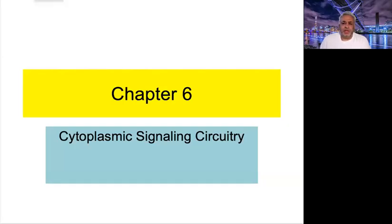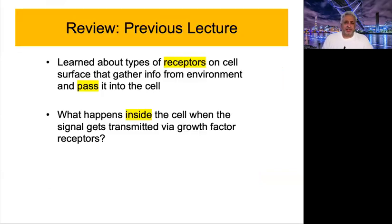Welcome back, folks. This is a video lecture to support Chapter 6, which is all about cytoplasmic signaling circuitry found within the cytoplasm of a typical mammalian cell. From previous readings of Chapters 4 and 5, we know that receptors are normally located at the surface of the cell because most signaling molecules are protein-based and therefore hydrophilic, unable to cross the plasma membrane. There are also receptor molecules located in the cytoplasm and nucleus, which we'll mention briefly at the end.